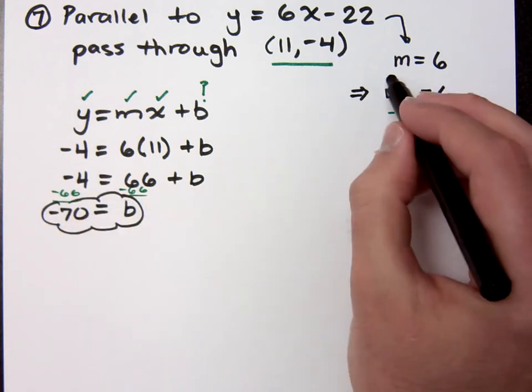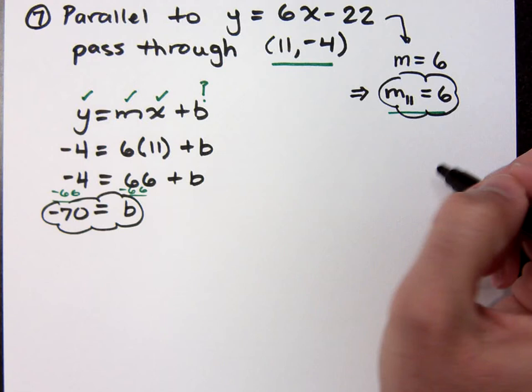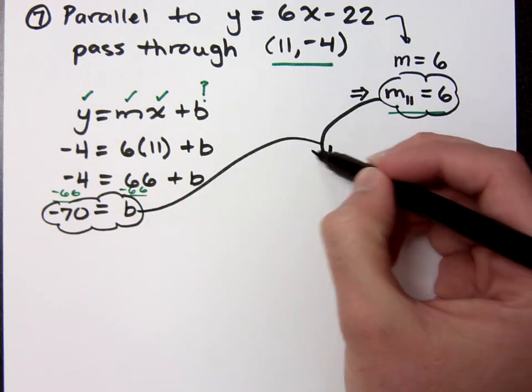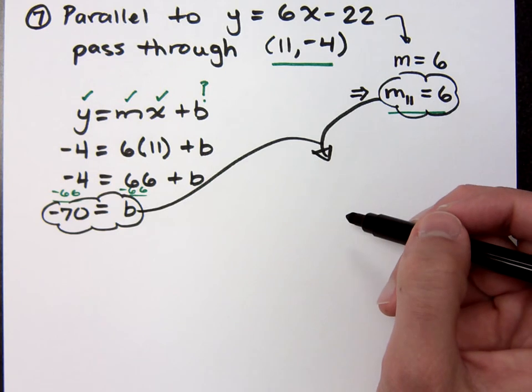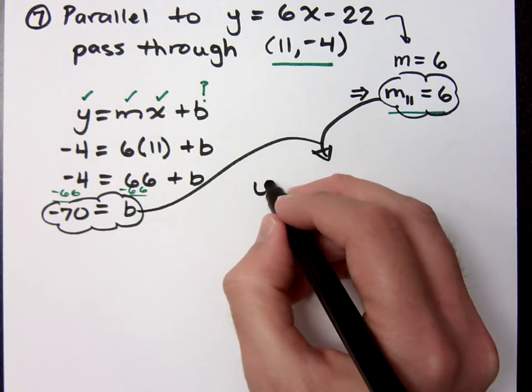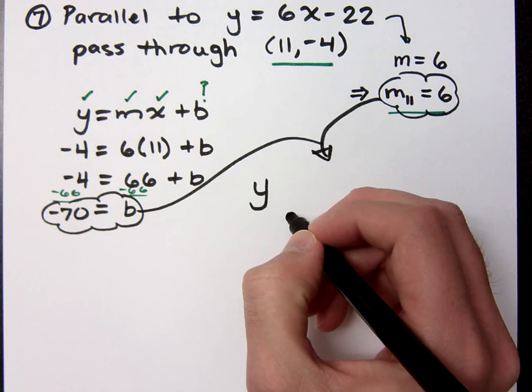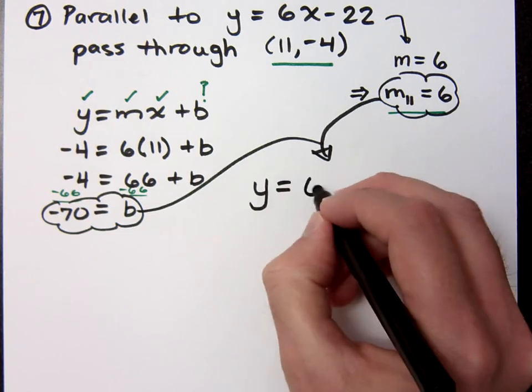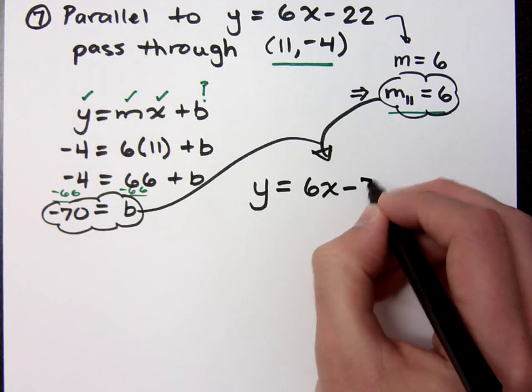So, I'm going to take my b. I'm going to take my slope, put them together, and I get what for my equation? Here's a hint. y equals 6x minus 70. y equals 6x minus 70.